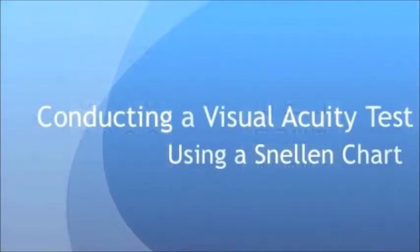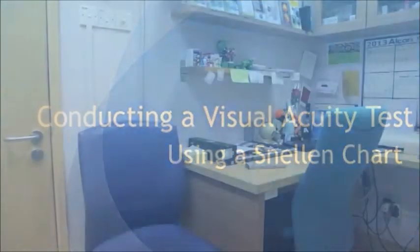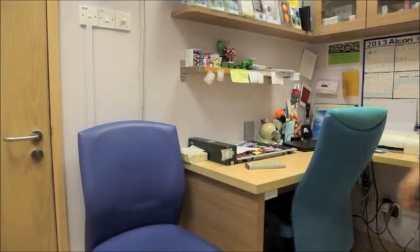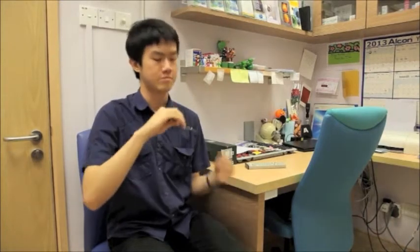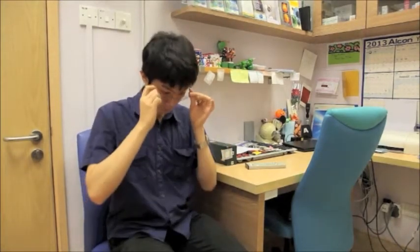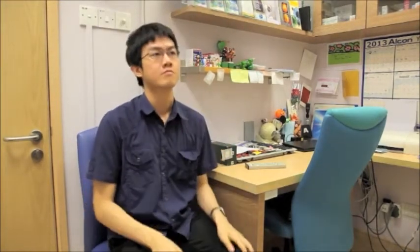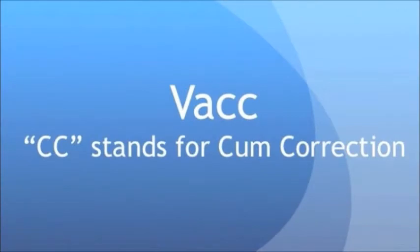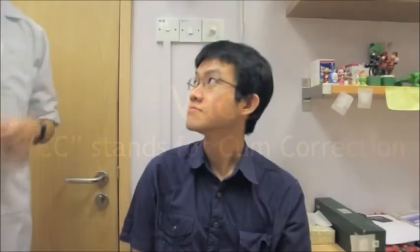This is how to do a distant visual acuity test using a Snellen chart. First, position the patient 6 meters from the eye chart in good lighting. If worn, have the patient wear his corrective distant glasses so that you can determine the best corrected visual acuity.